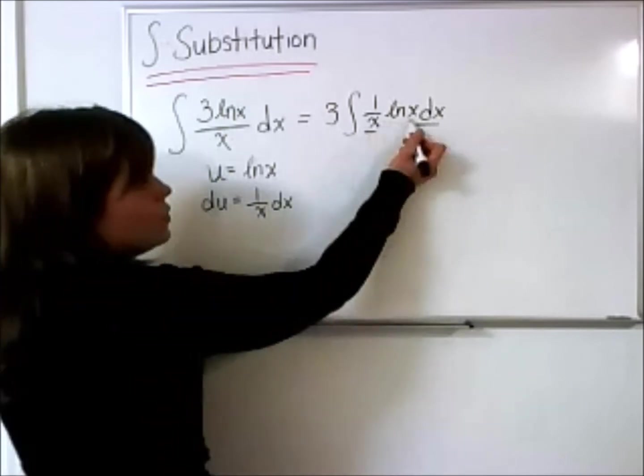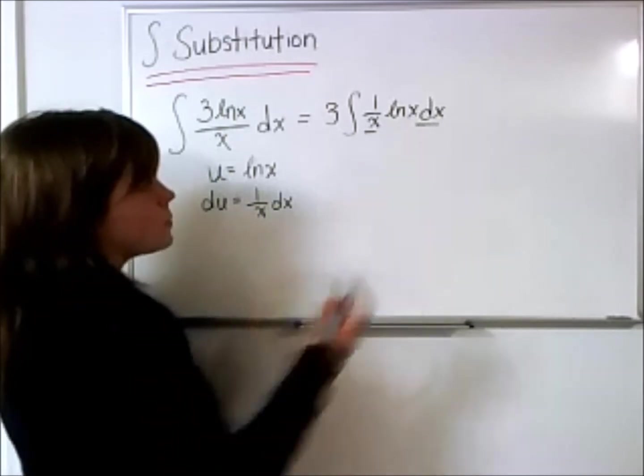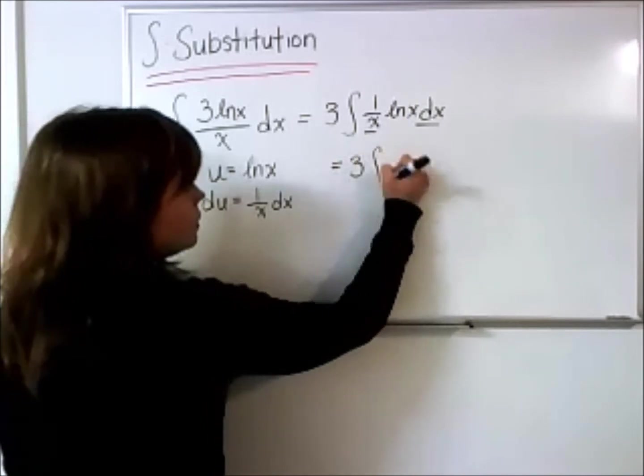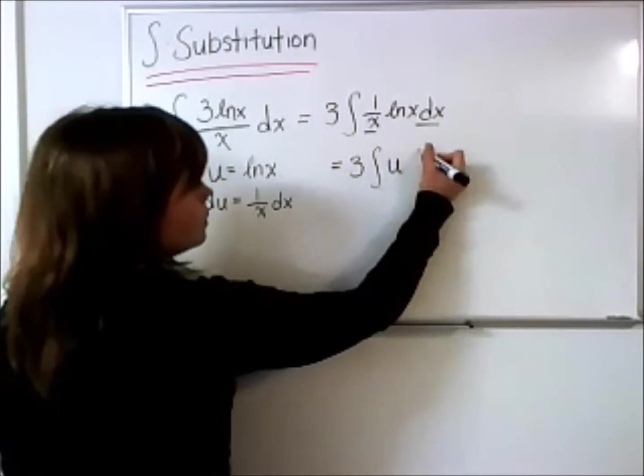and then, of course, our u is this natural log of x. So, doing the substitution, we'll get 3 times the integral of u du.